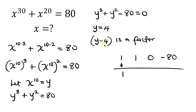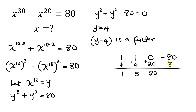Remember that the first factor is found from when y equals 4. So I'll take this 1 and multiply by 4 — 1 times 4 is 4. Now add: 1 plus 4 is 5. Repeat: 5 times 4 is 20. Add: 0 plus 20 is 20. Repeat: 20 times 4 is 80. Add: negative 80 plus 80 is 0.